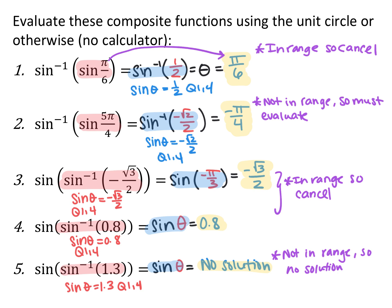For numbers 4 and 5, the values are not on the unit circle, but we can use properties to figure them out. Sine of sine inverse of 0.8 asks: what angle has sine equal to 0.8 in quadrants 1 and 4? We don't need to know the exact angle — the sine of that angle is 0.8, so they cancel because 0.8 is in the range of sine, which is negative 1 to 1. For sine of sine inverse of 1.3: sine inverse of 1.3 would require an angle whose sine is 1.3, which is impossible. The range for sine is negative 1 to 1, so 1.3 is never achievable — the answer is no solution.